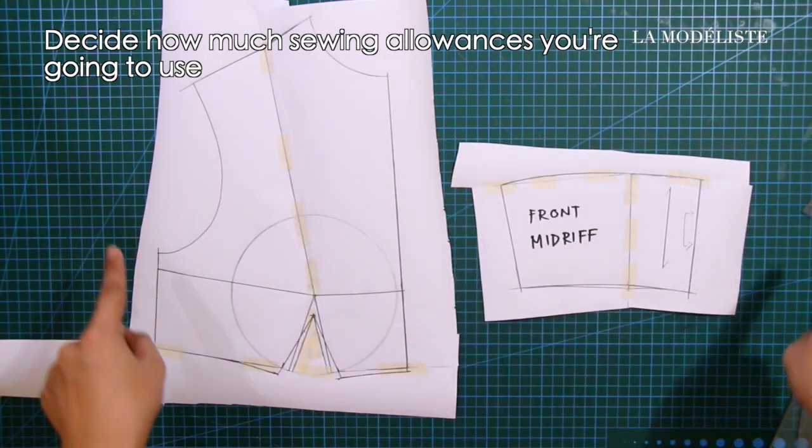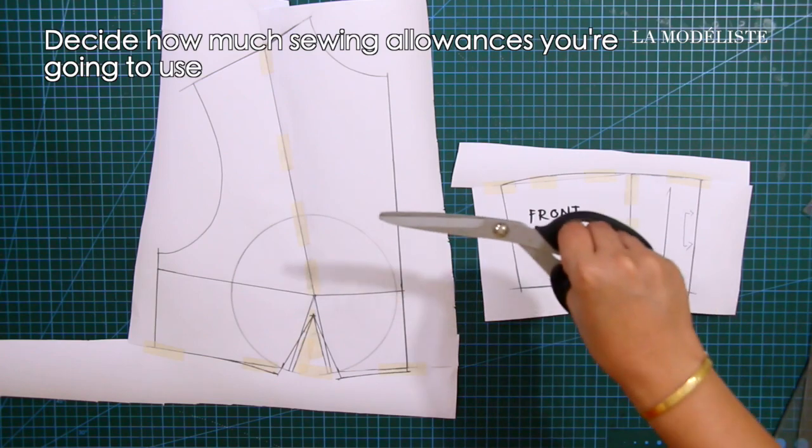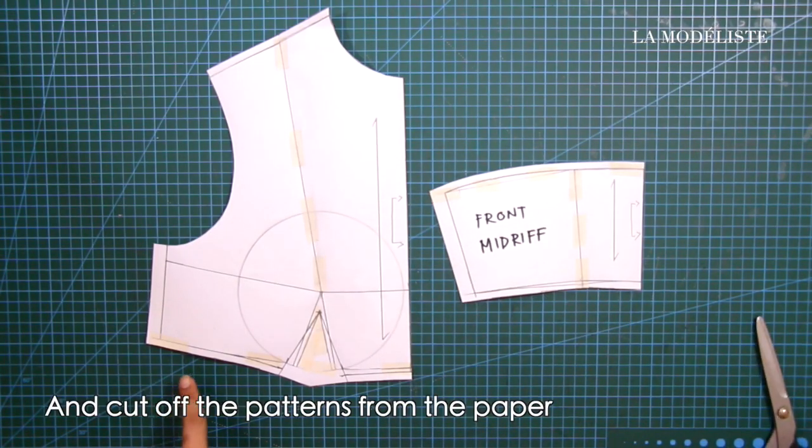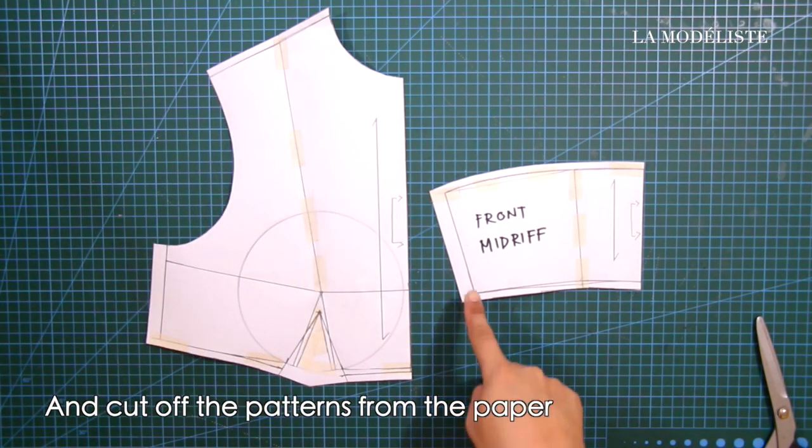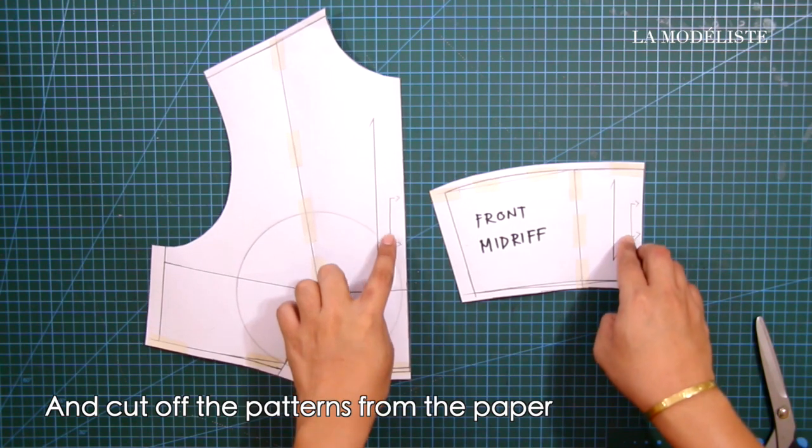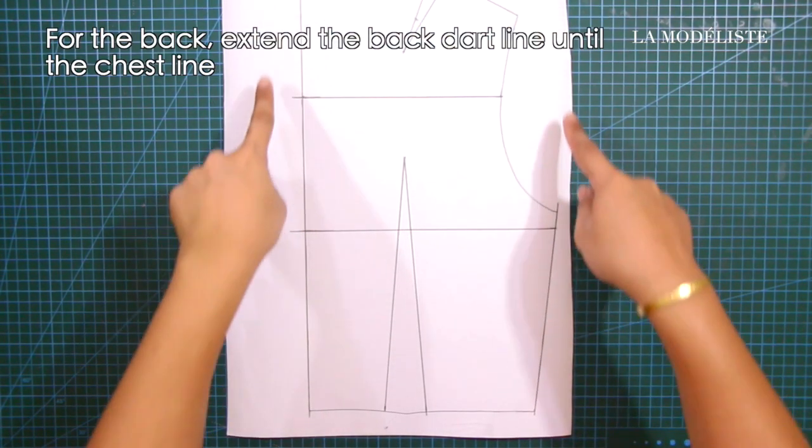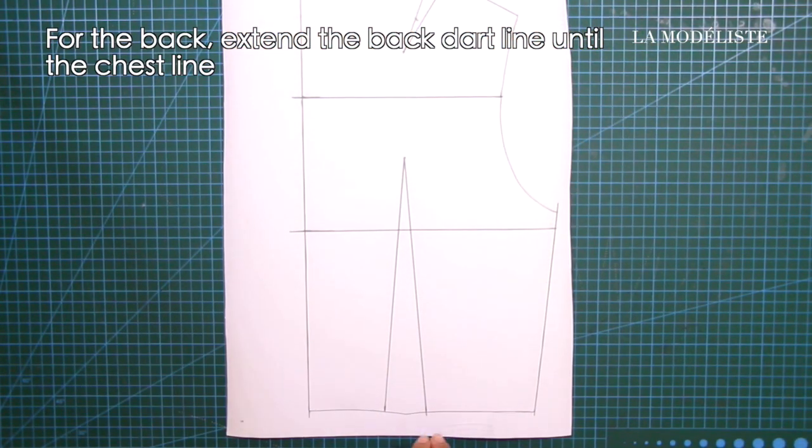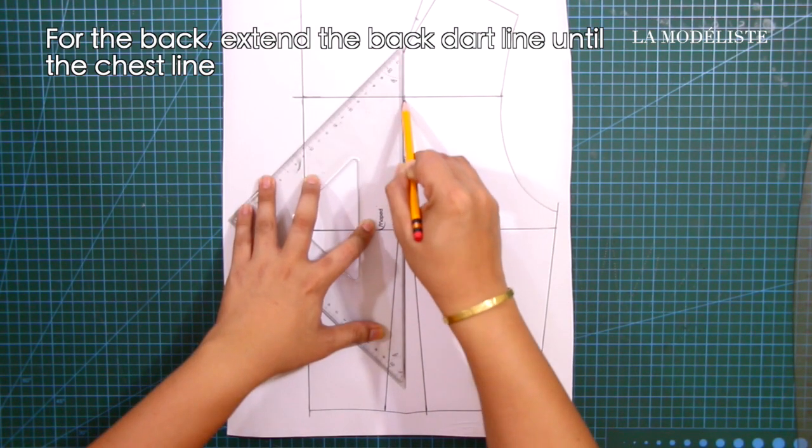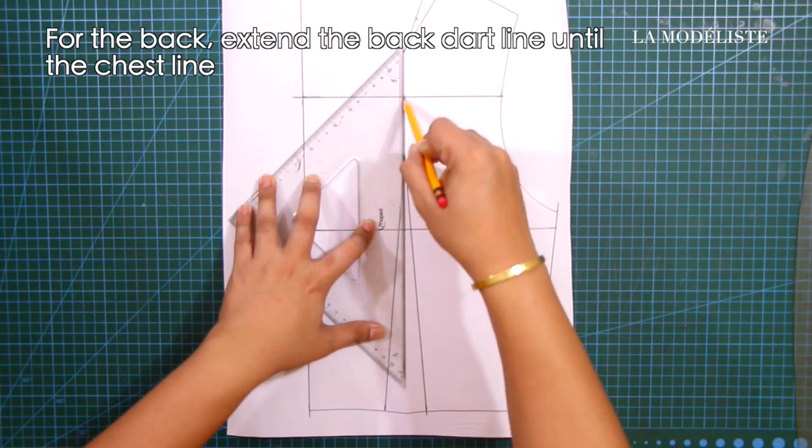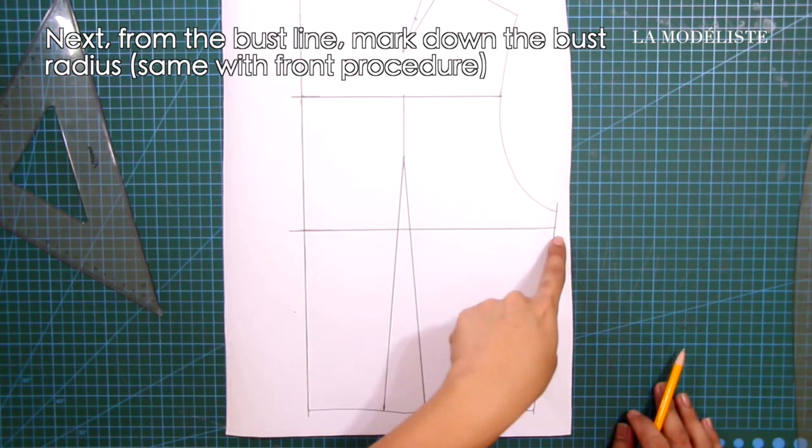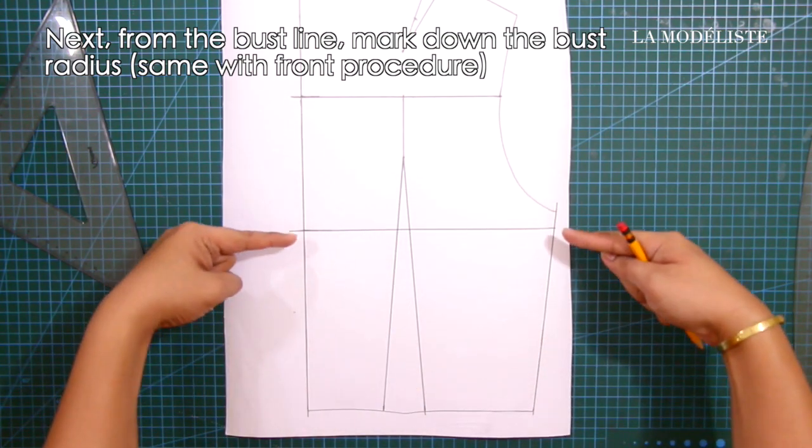Decide how much sewing allowance you're going to use and cut off the patterns from the paper. Next, from center front at underbust for the back, extend the back dart line until the chest line. Next, from the bust line, mark down the bust radius same with the front procedure.